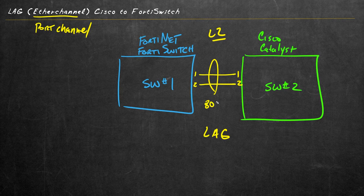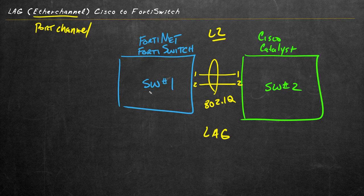For a deeper dive into the world of EtherChannel and port channel, please check out my other videos here on YouTube. For this demonstration, I want to walk through the configuration and verification of the link aggregation group - the EtherChannel - between the Cisco device and the FortiSwitch device. So let's start here on the Cisco Catalyst switch.